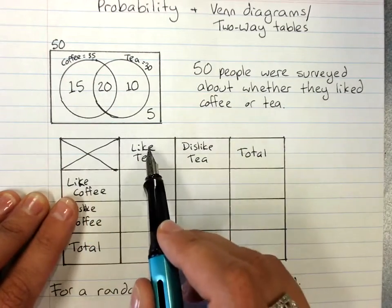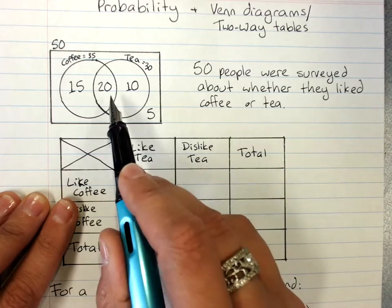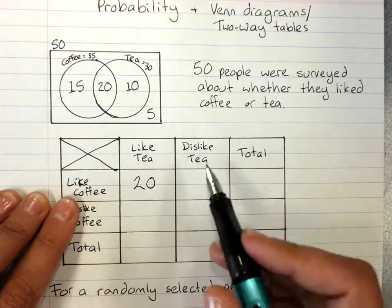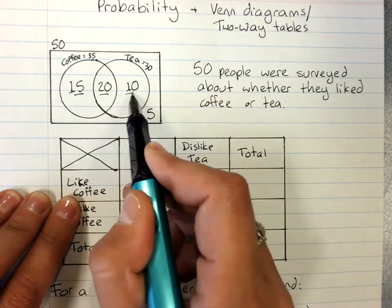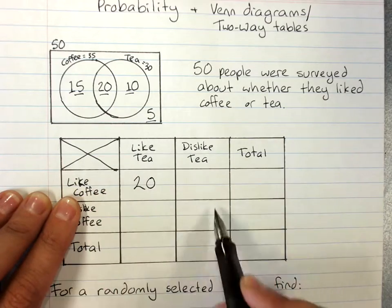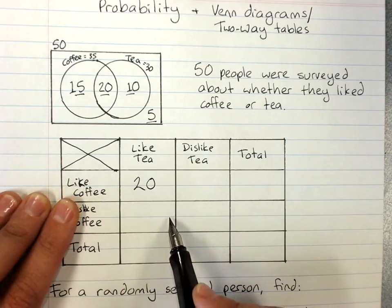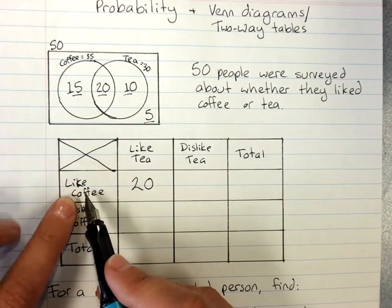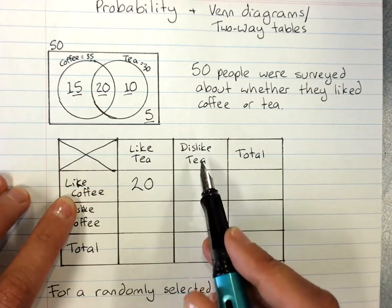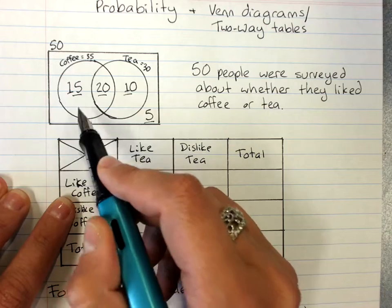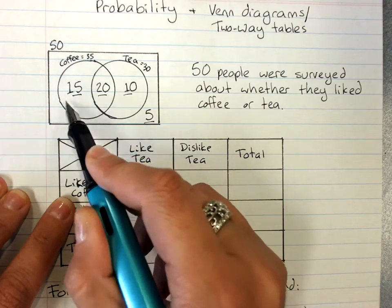Who likes tea and likes coffee? These 20 people right here. Remembering that these four numbers in the Venn diagram go in the four center parts of the two-way table. Who likes coffee but dislikes tea? The people in the coffee circle who are not in the tea circle? These 15.